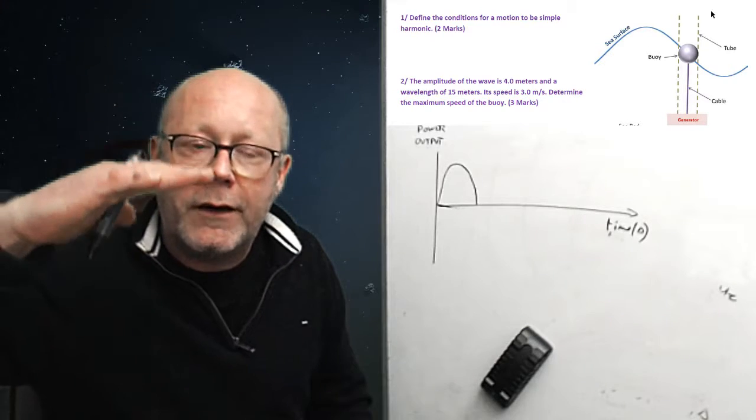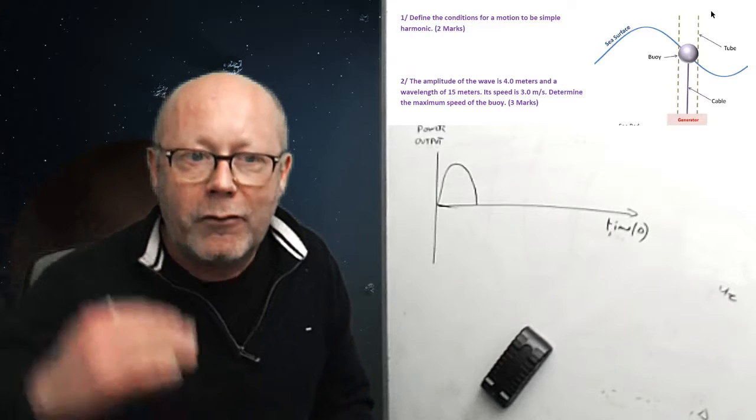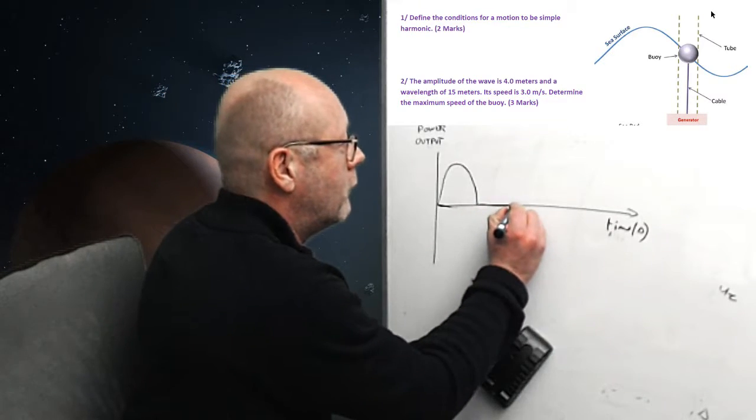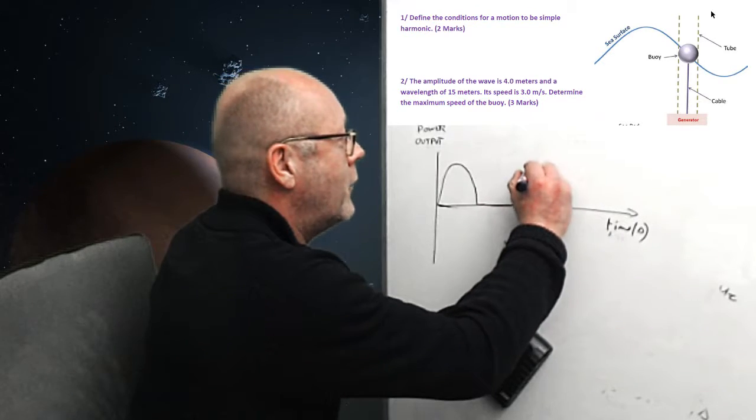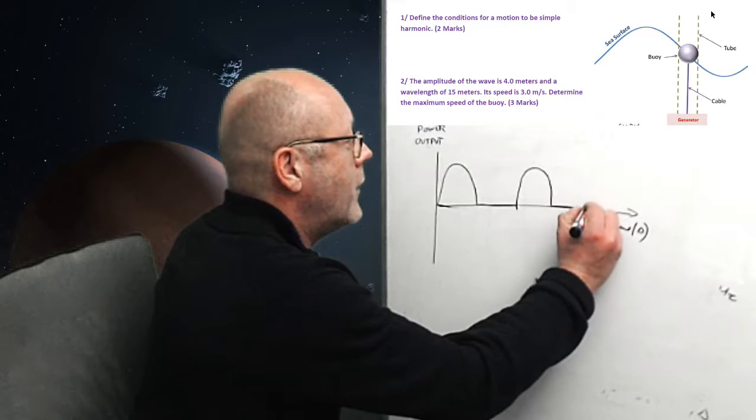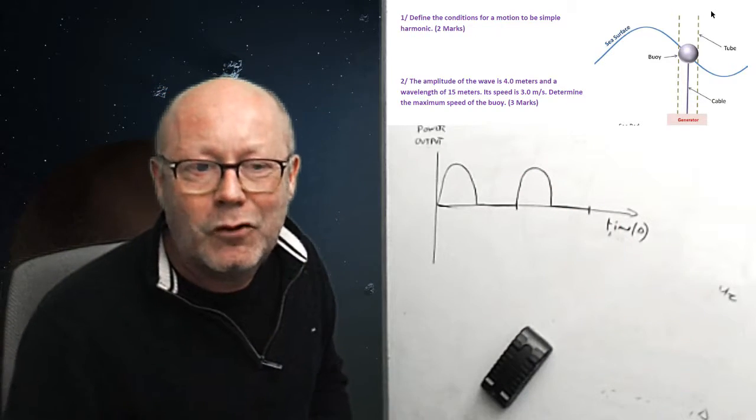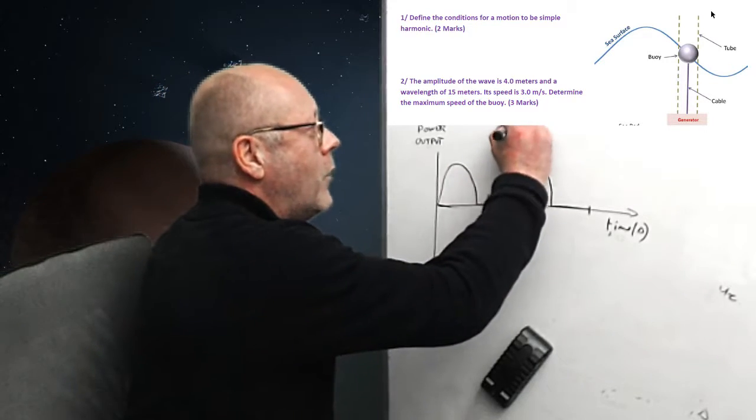So, the power would also do the same. But here you did one half of the cycle. What about the other half? Well, now the buoy is going down. But we saw that nothing would be generated. No power would be generated if the buoy goes down. So, we would have nothing. And that would be one period. And then we can have another cycle. And then we can have a period. So, they ask us to scale up. To put some numbers there. Right. So, what would be the period? Well, it's just one over the frequency.